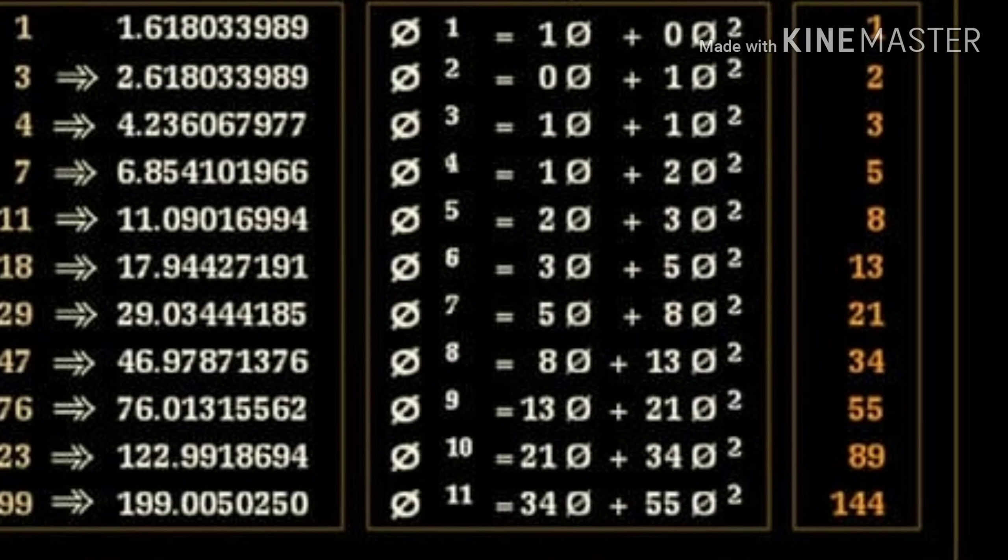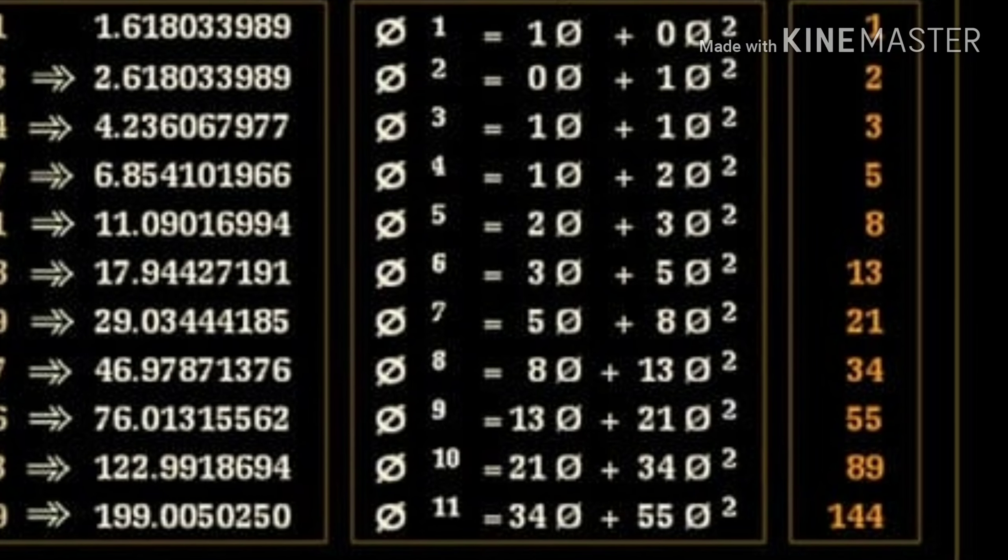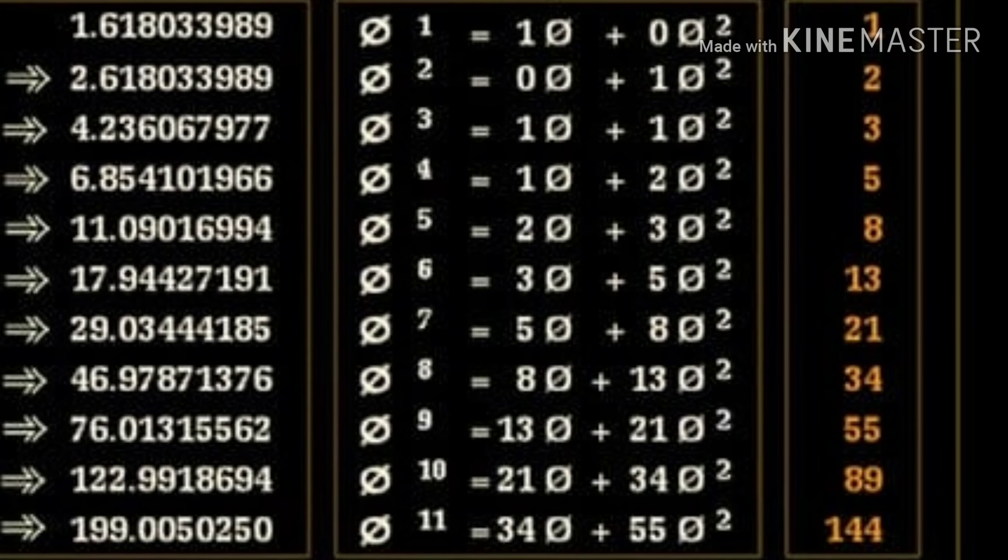This series is called the golden ratio. 1 plus 2 equals 3. 2 plus 3 equals 5. 5 plus 8 equals 13. 8 plus 13 equals 21. You're getting it. Let's go.